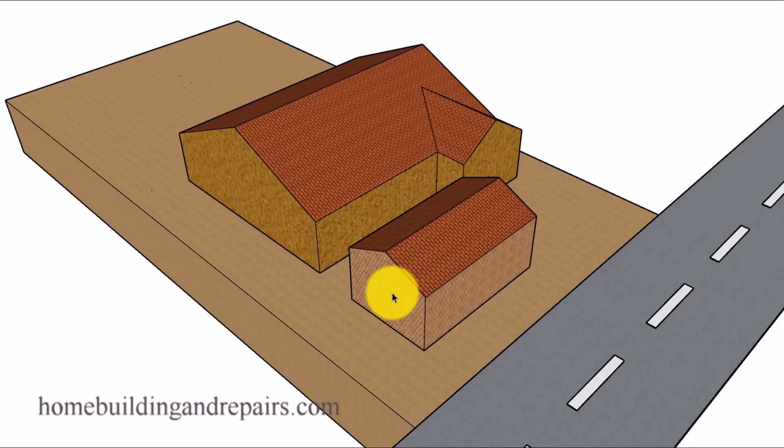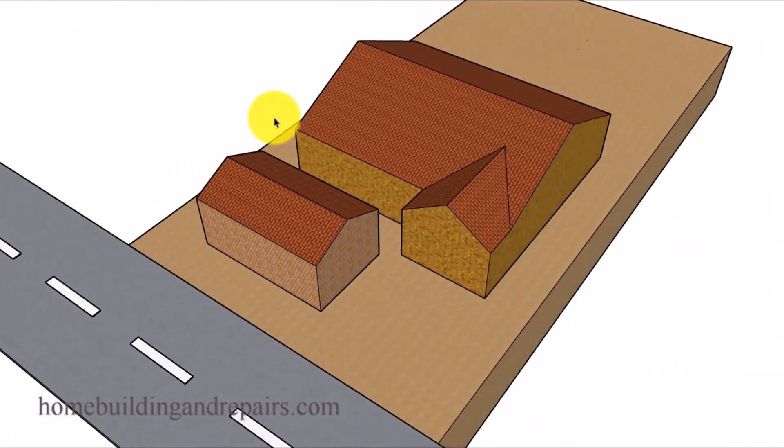But again, this is something that would need to be approved by your local planning department, because most of the time we have easements that require a minimum distance to the front of a building, the front of your home and possibly the center of the street. And of course that would be something your local planning department could help you figure out.